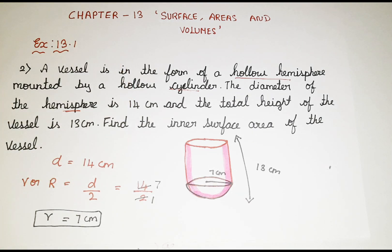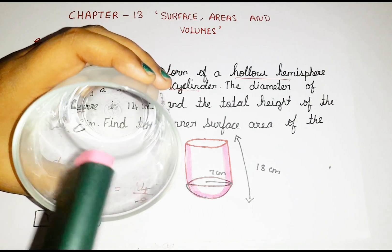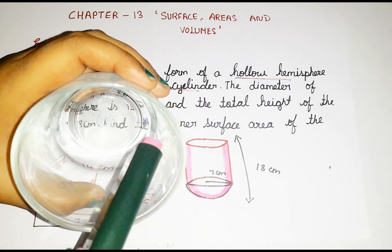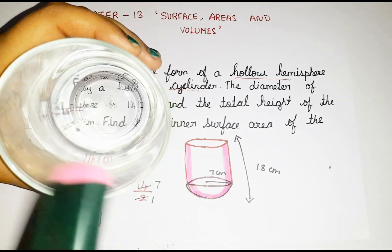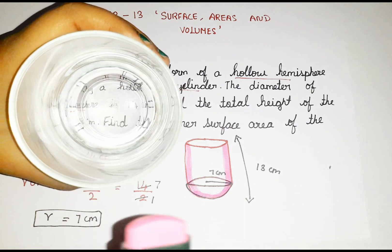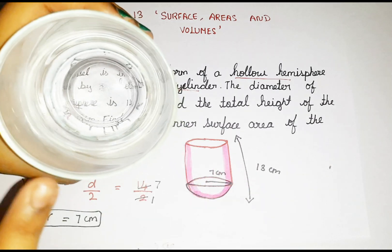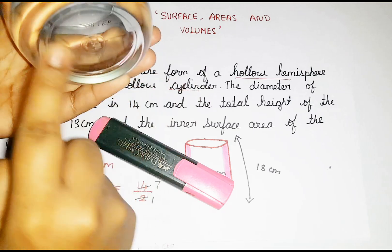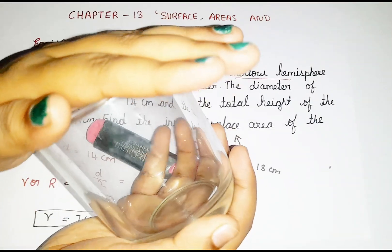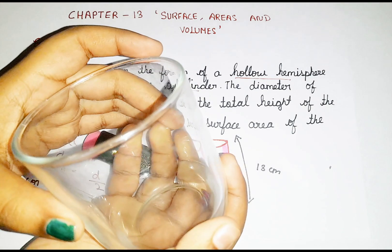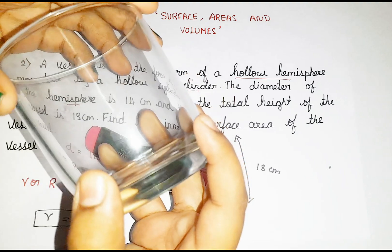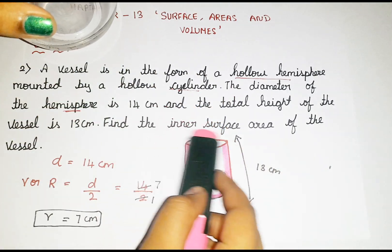Curved surface area means the curved surface only. Total surface area means we are painting even the flat edges as well. But since they mentioned inner surface area, we are just painting the inside — only the curved part, not the outer surface.